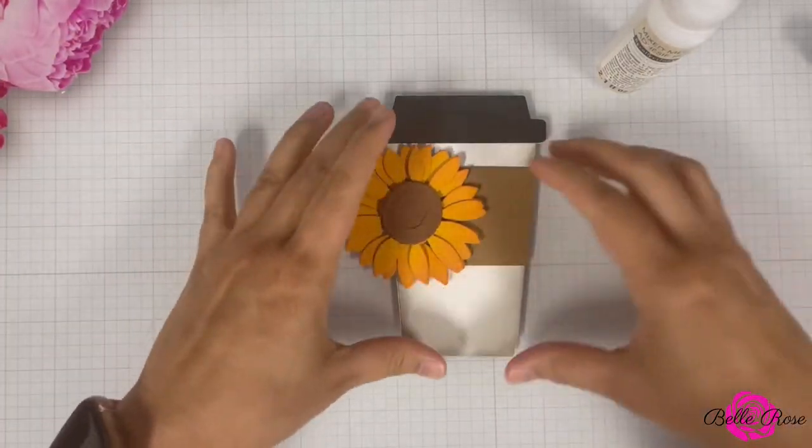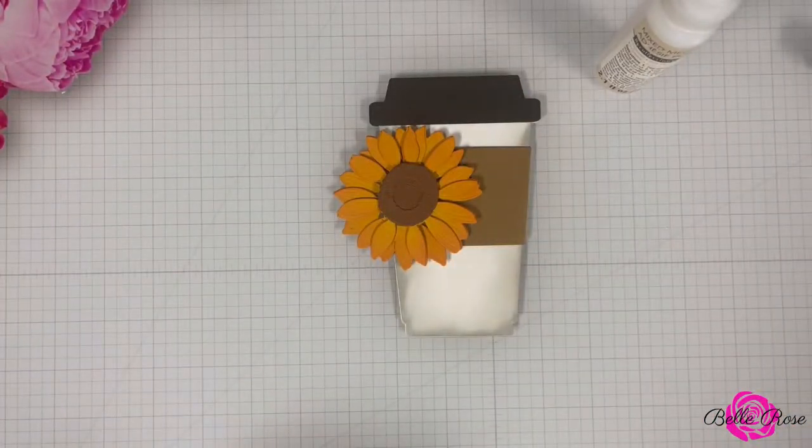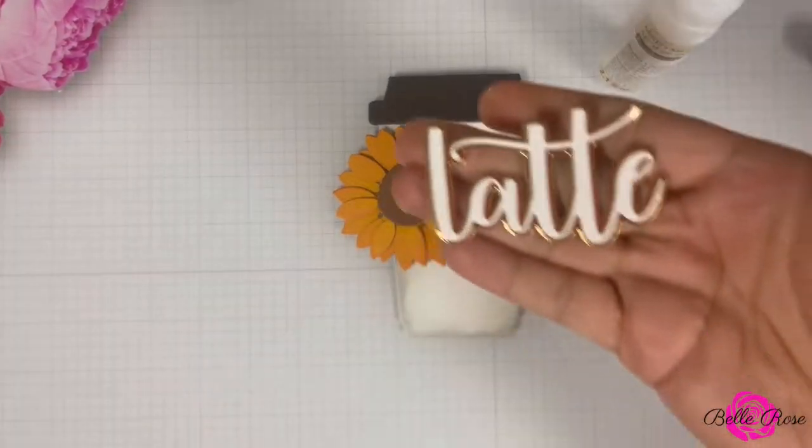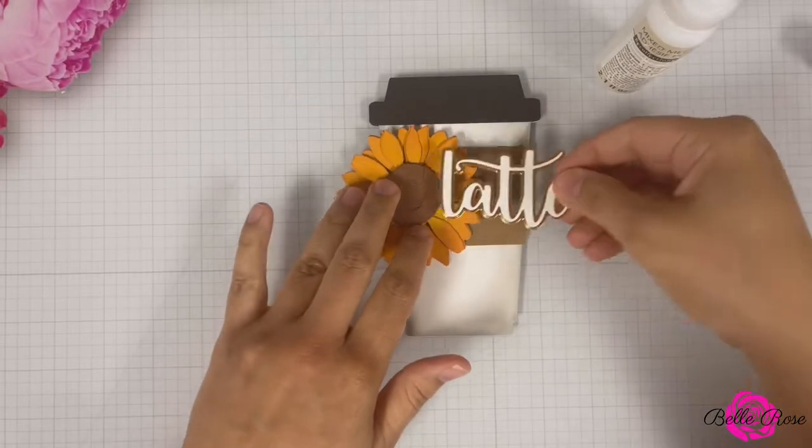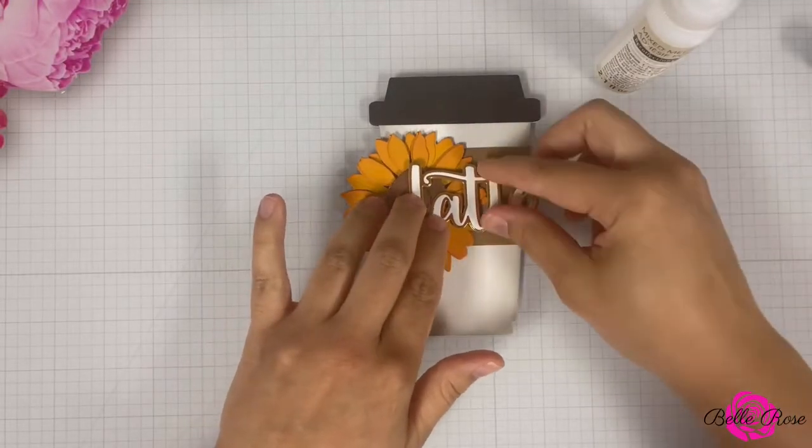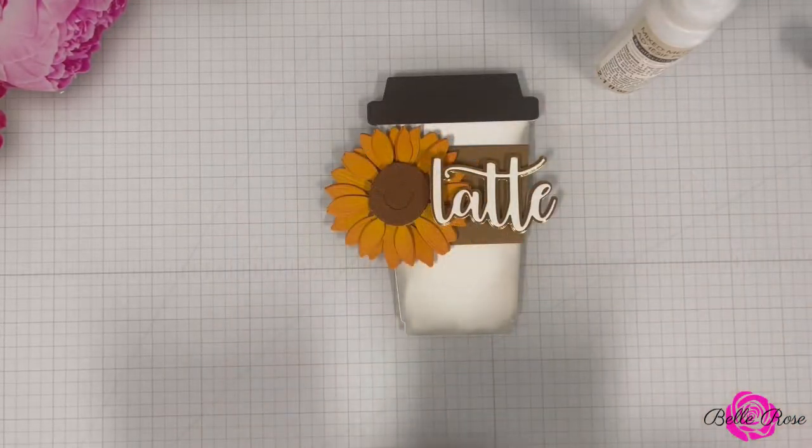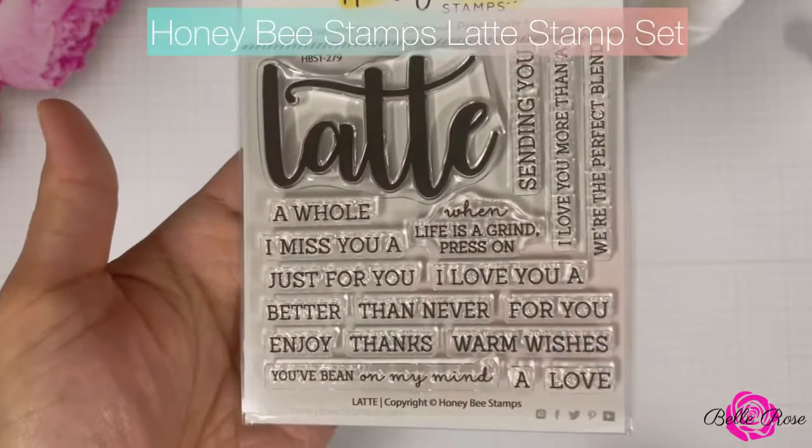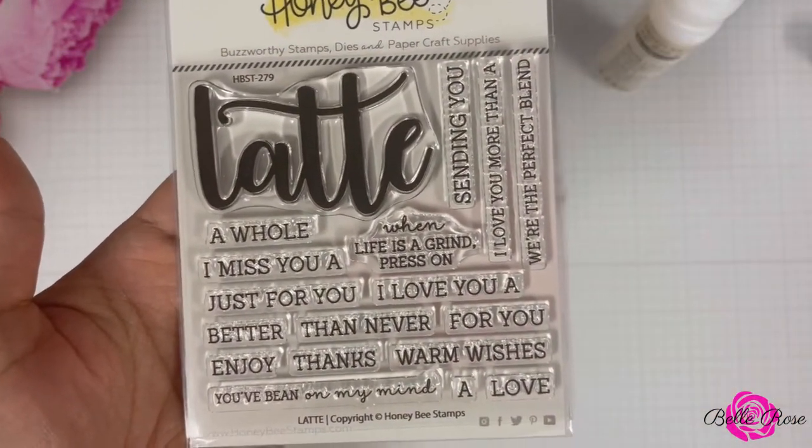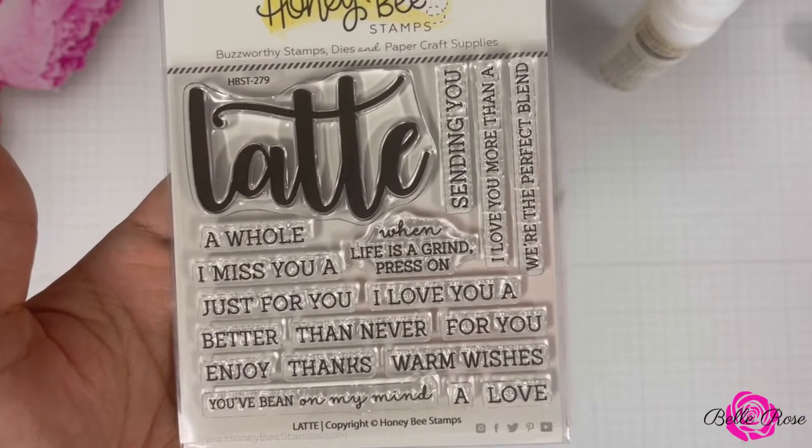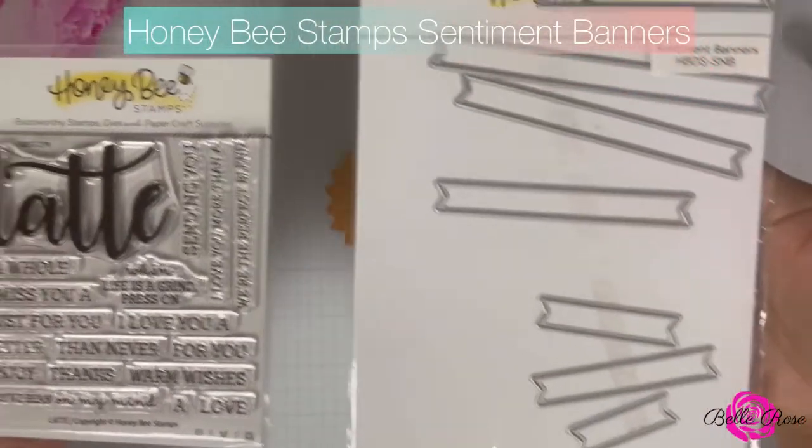Now it's time for the fun part, adding our elements to the card front. So remember the latte, how I removed the L and the A? I did that so that when I positioned it on the card front, it would be even. Next I'm going to bring in Honey Bee Stamps Latte Stamp Set along with the Honey Bee Stamps Sentiment Banners die set.